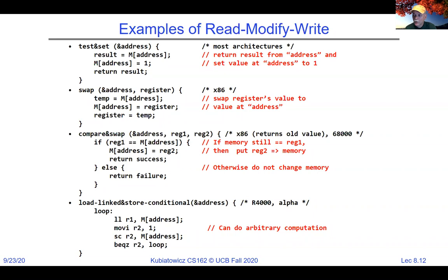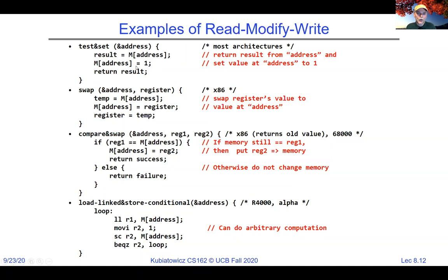To repeat: everything between the two braces happens all together at once, atomically, in a way that two threads cannot be interleaved. For test-and-set, the implementation locks the memory bus and a load and store happen simultaneously. Why store one? One is a good value for synchronization, as we'll show in a moment.